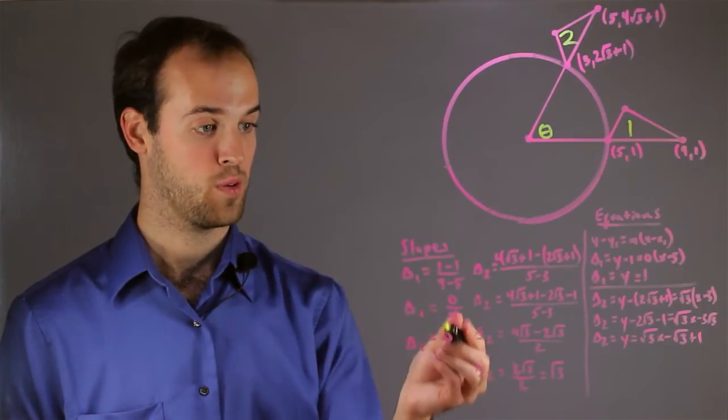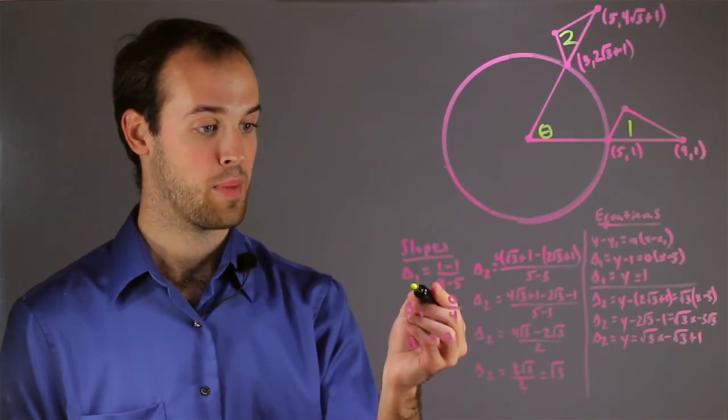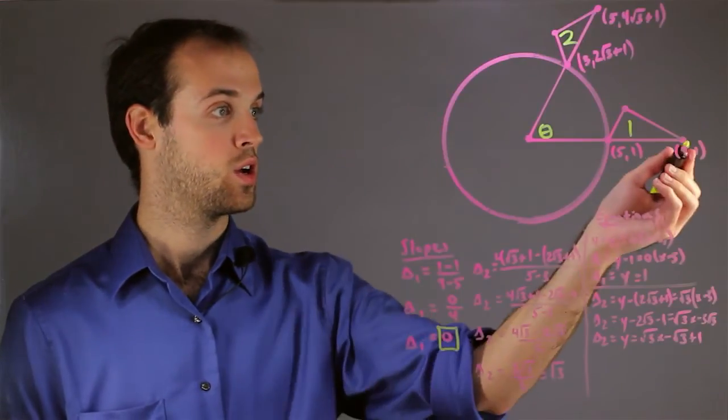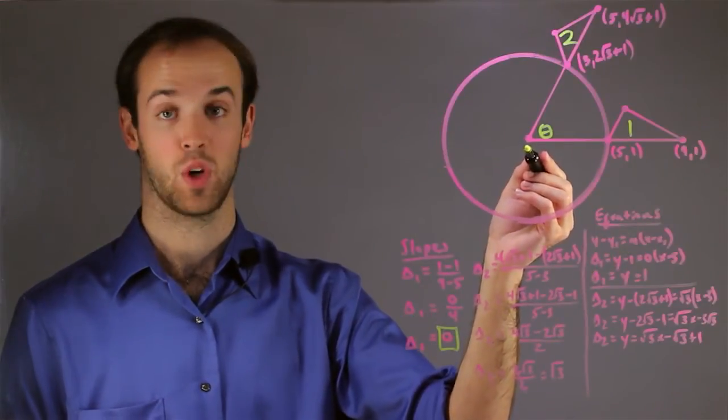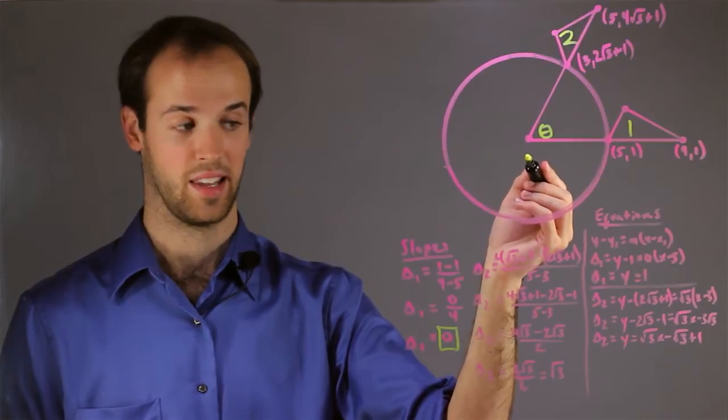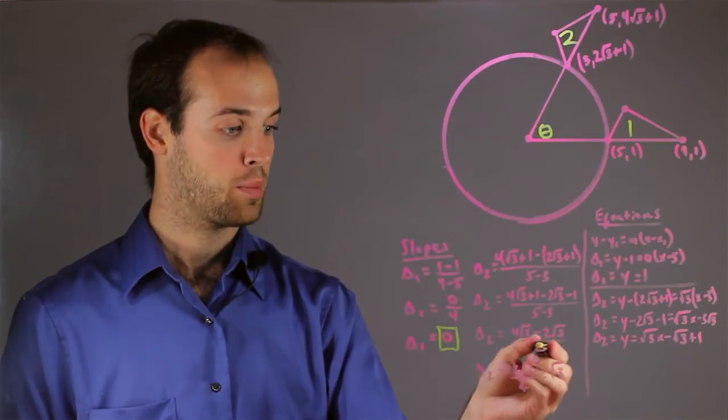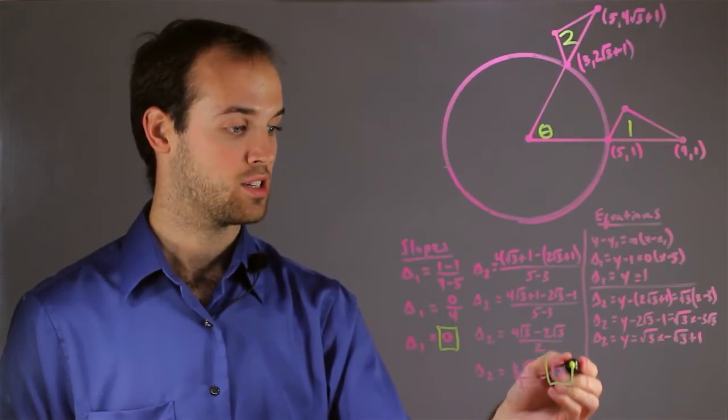So I've done some of the work for you. I found that the slope of the base of triangle 1 is 0, which is nice because that means I know that it's a horizontal line. I'll be able to use that later. And for triangle 2, it was a little bit more complicated, but I found that the slope is the square root of 3.